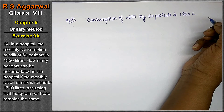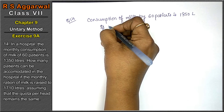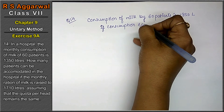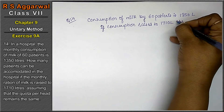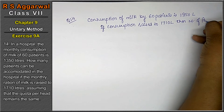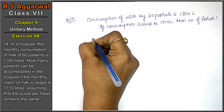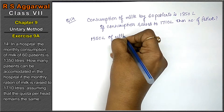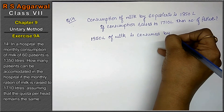How many patients can be accommodated in the hospital if the monthly ration of milk is raised to 1,710 liters? If consumption is raised to 1,710 liters, then the number of patients equals — that is what we need to find.